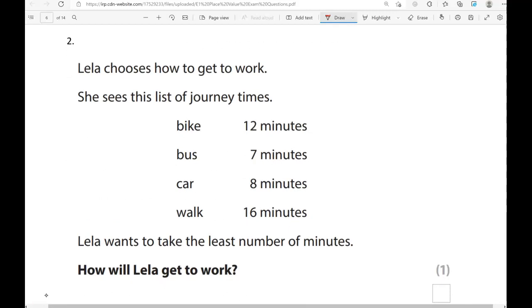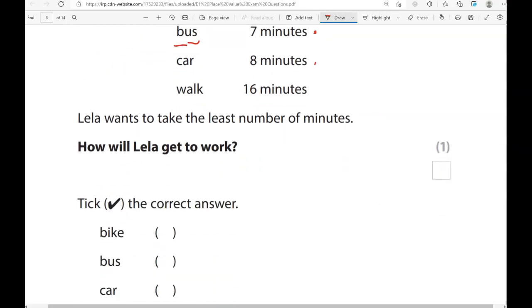Leila chooses how to get to work. She sees this list of journey times: bike 12 minutes, bus 7 minutes, car 8 minutes, walk 16 minutes. Leila wants to take the least number of minutes. How will Leila get to work? We're looking for the lowest number out of 12, 7, 8, and 16. 12 and 16 are above 10, so they are greater than 7 and 8. So comparing 7 and 8, which one is the lowest? When you count from 1, you're going to say 7 before you say 8. So 7 means less than 8, so 7 is the lowest. So that is for the bus, so we're going to say bus.